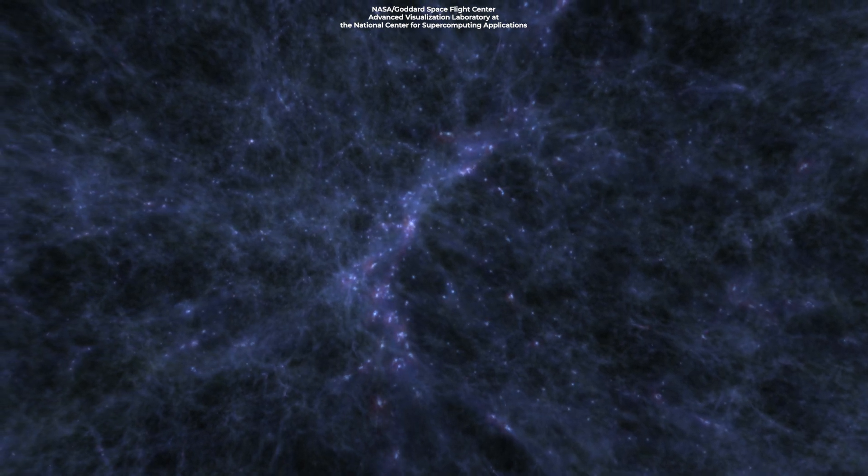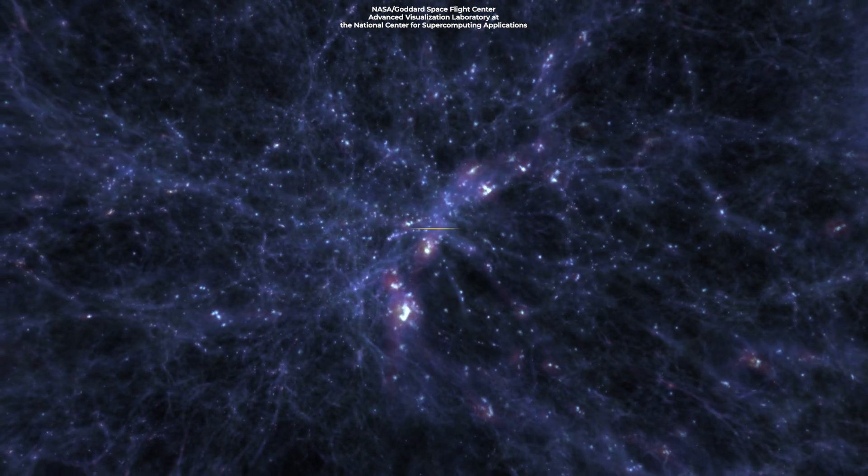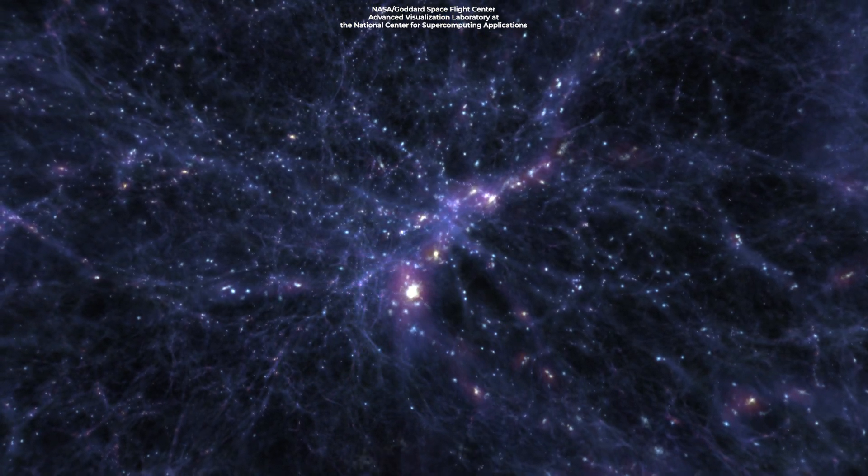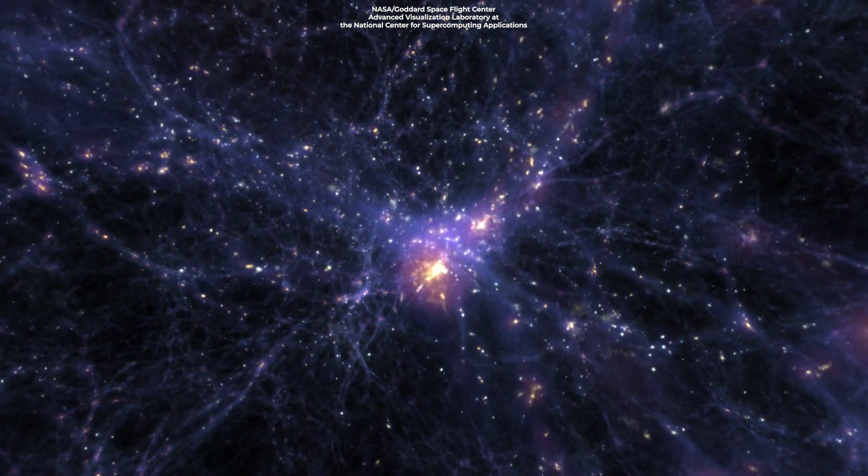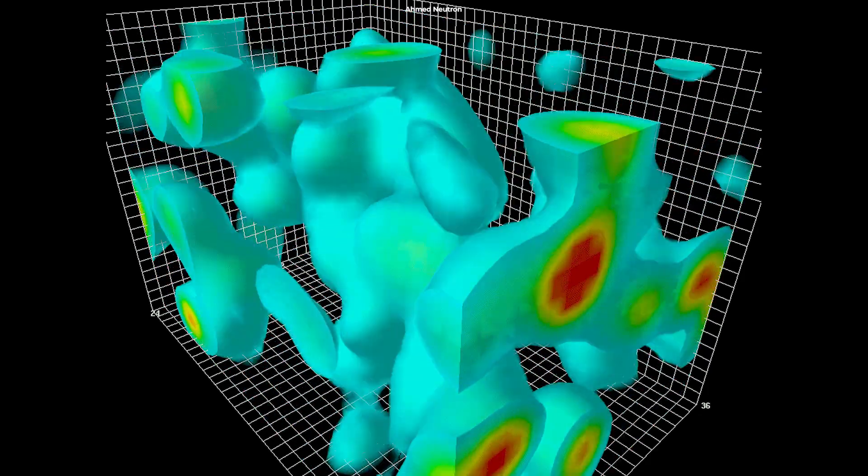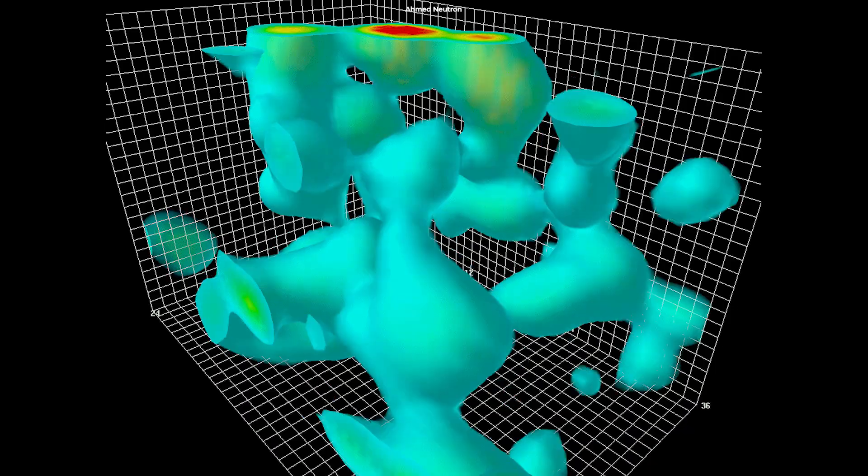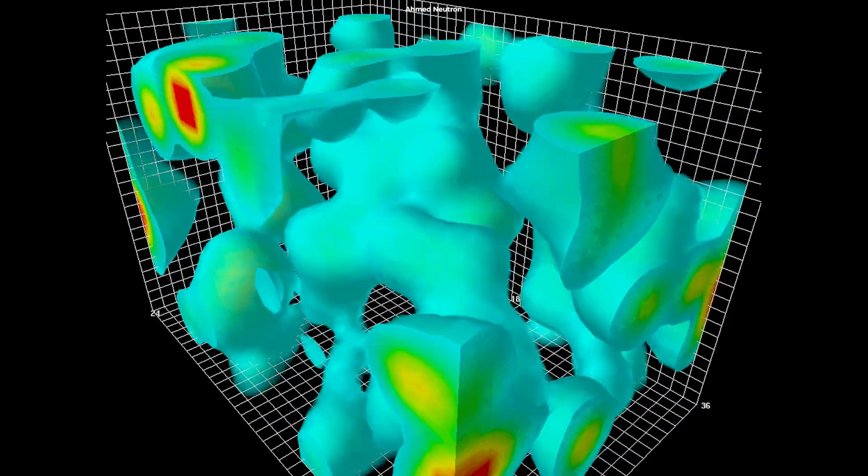Theory suggests these super-vast structures are formed by what's called hierarchical clustering, which is the process by which larger structures form through the continuous merging of smaller structures. This means galaxies gathered around primordial density fluctuations, which are quantum mechanical fluctuations in the density of the universe, in the very first moments after the Big Bang.